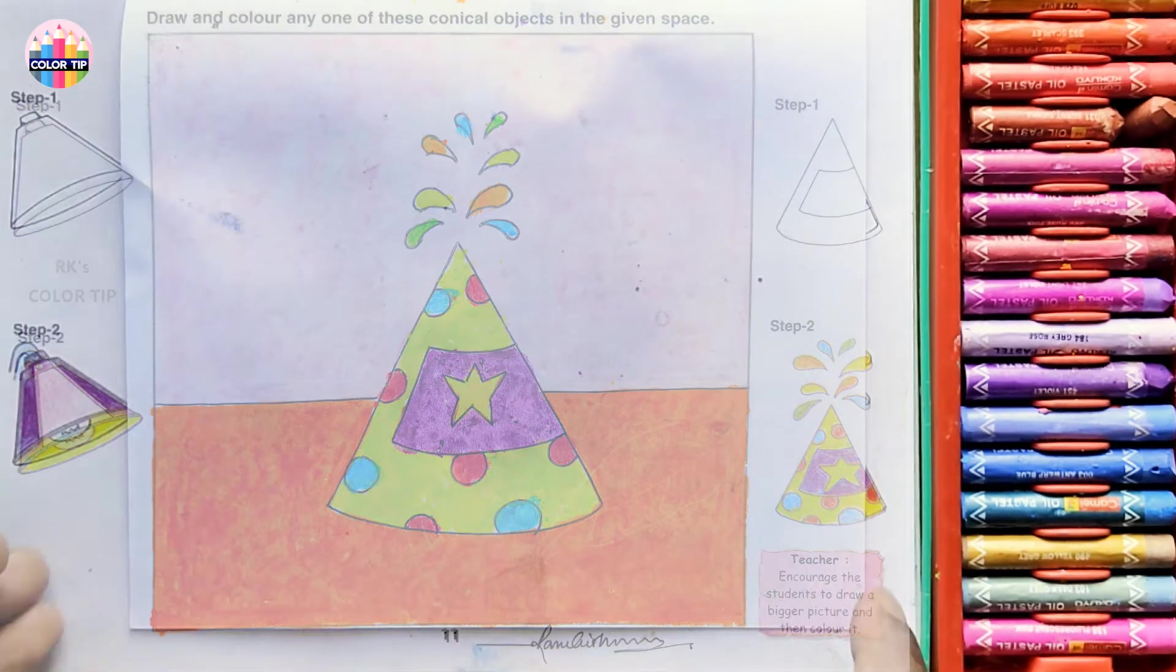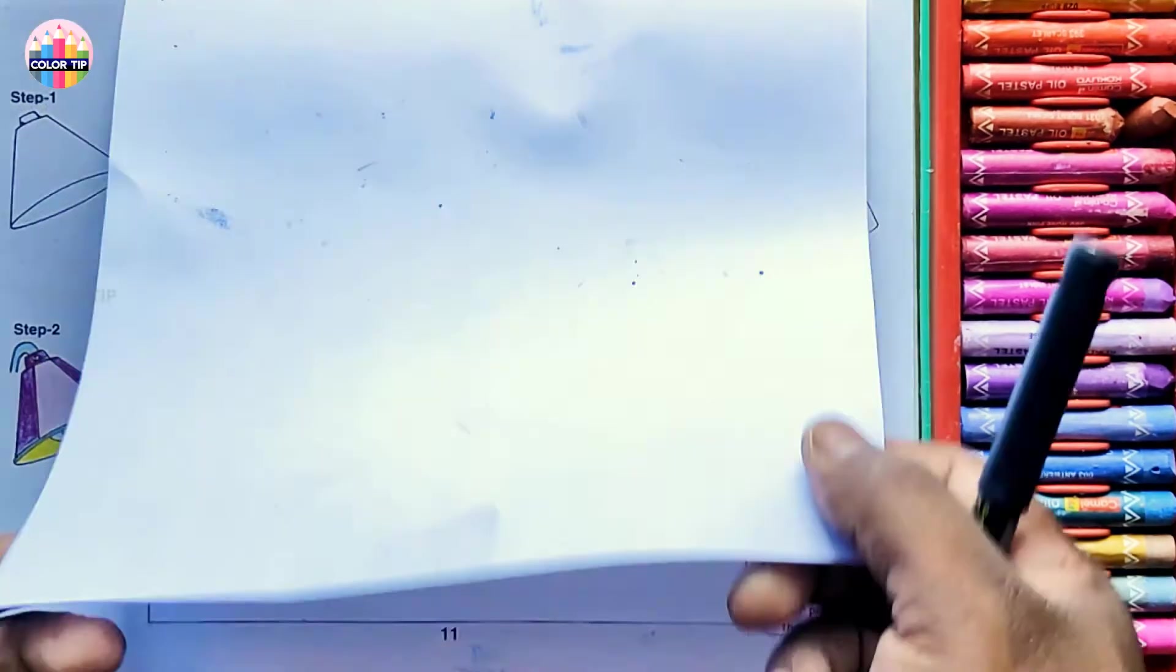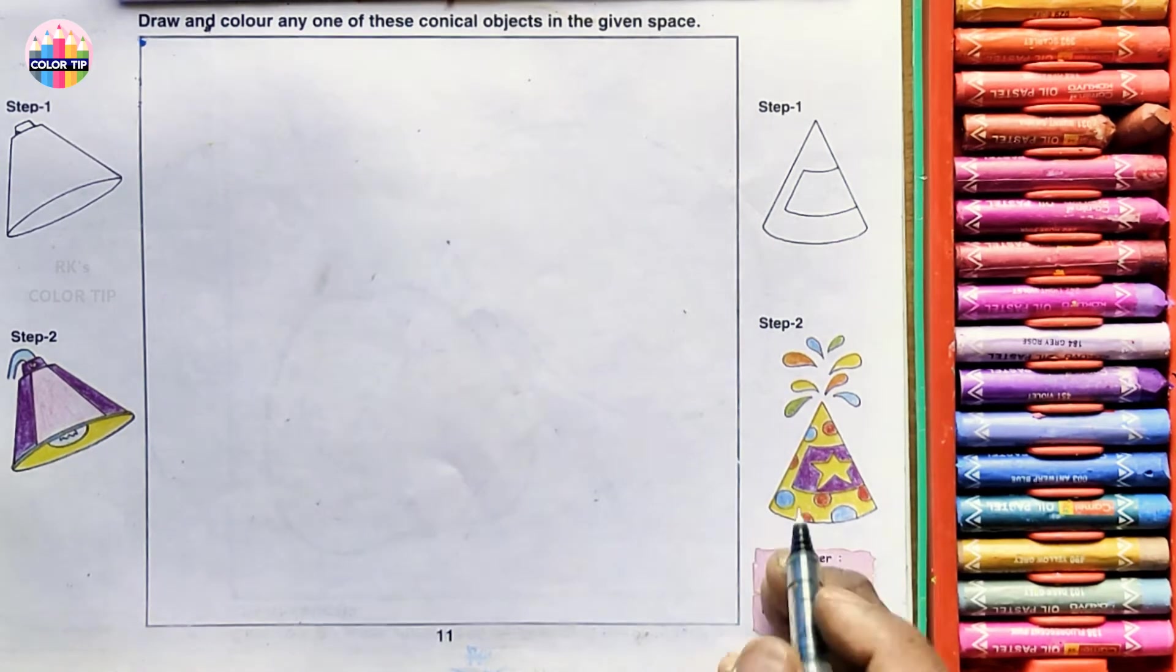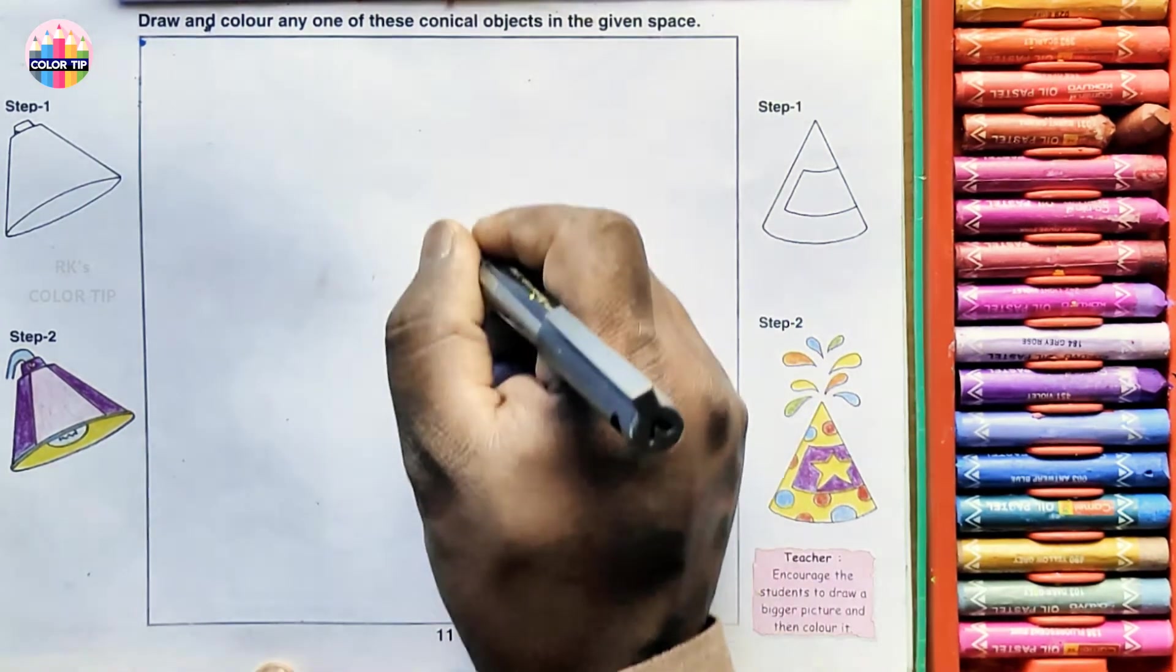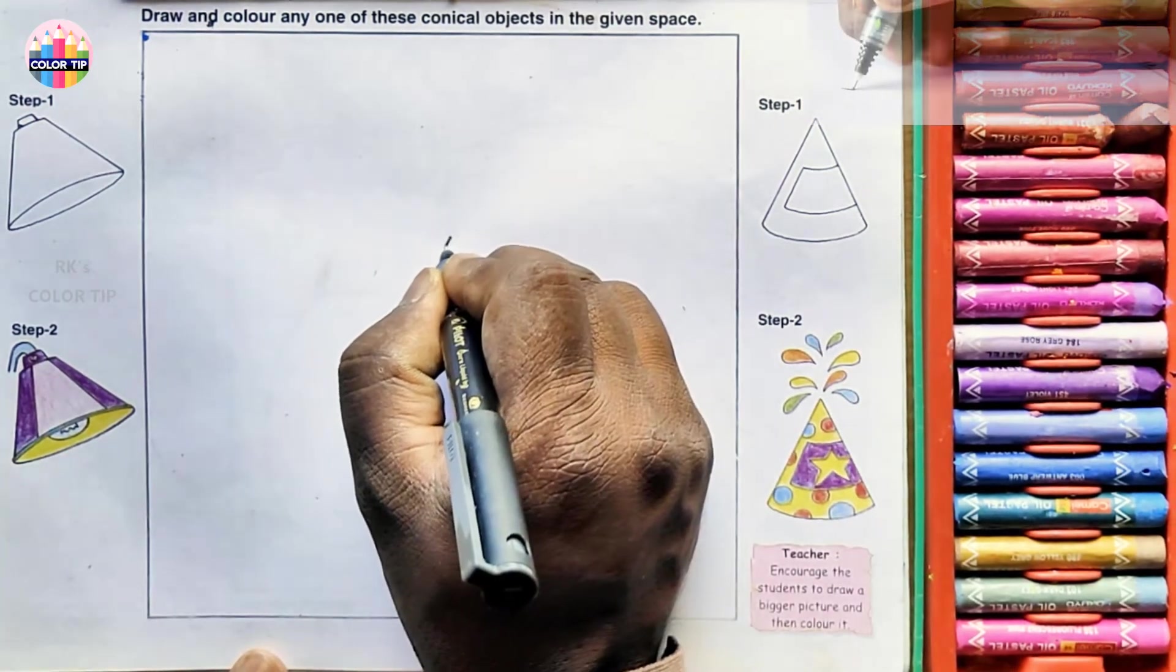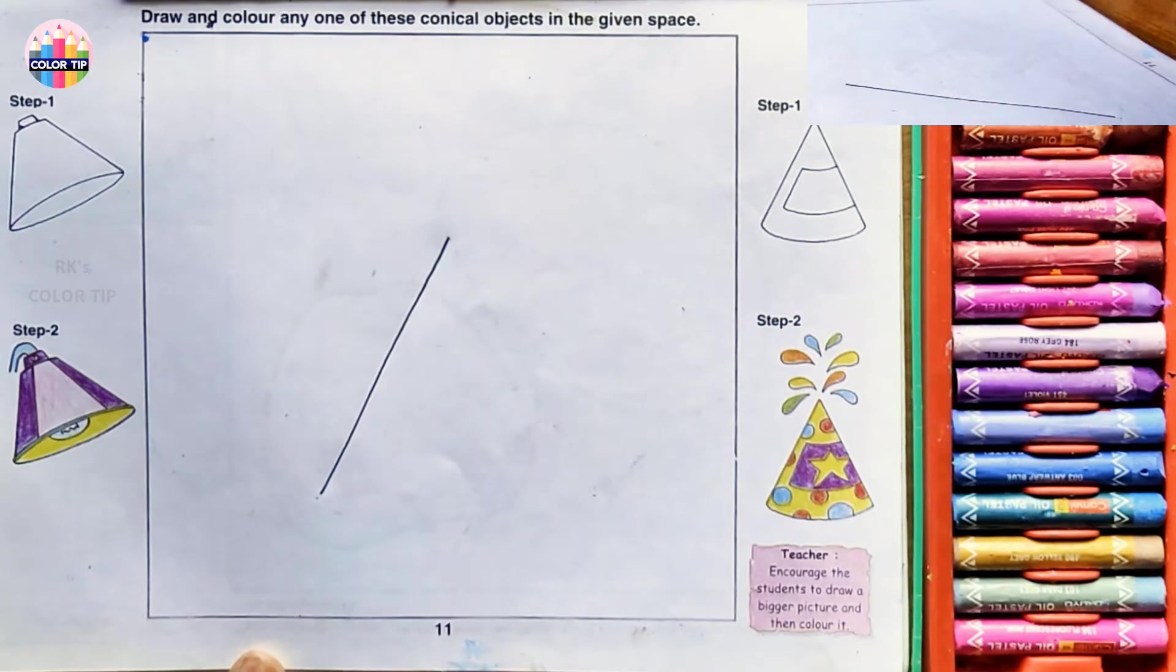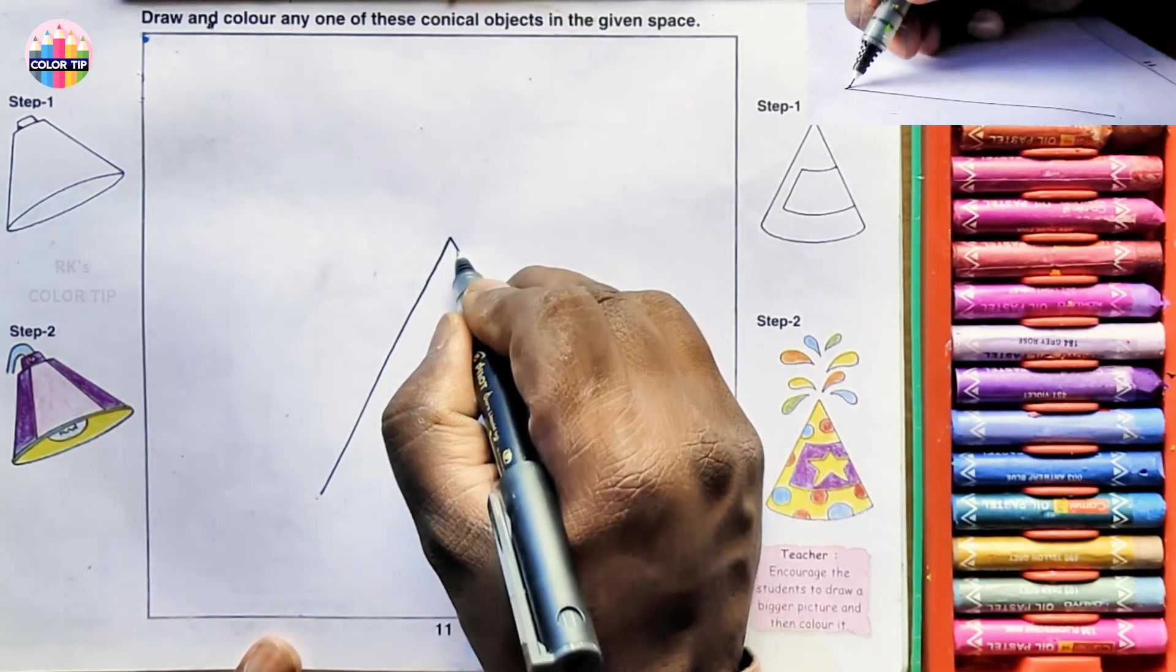Step by step class 2, page number 11. These are two objects given on a conical shape. Let's try this one. Flick up, leave some gap right in the middle. Draw a slanting line and as well as on this side, the opposite side.